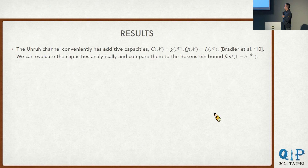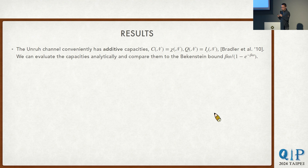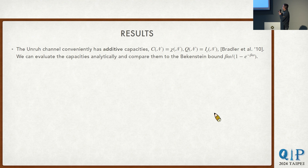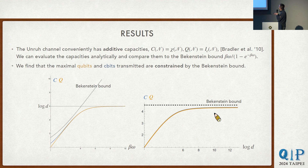We care about capacities rather than entropy. The reason we choose the Unruh mode is that it gives us additive capacities, so we can evaluate these quantities. The classical capacity is given by the Holevo information, and the quantum capacity is given by the coherent information. For those who know the definitions, these involve differences of entropies that cancel the UV divergences, so you don't have to regularize them by hand. Since they are additive and single-letter, we can calculate these things and compare them to the bound.